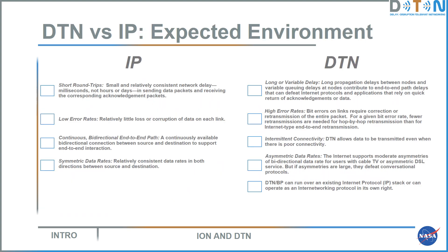The environment expectations of IP and DTN are quite different. In IP, we expect short round-trip times; in DTN, we expect long and/or variable delays. In IP, client-server negotiation and end-to-end retransmission all rely on brief round-trip times — and all of these are assumed to be unavailable in DTN. So the DTN architecture is engineered to not require them.